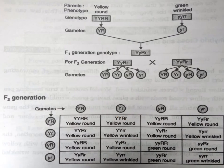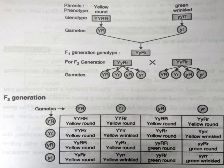Now we will see detailed information about dihybrid cross. A cross between two pure lines with two different pairs of contrasting characters is called a dihybrid cross. In this slide, you can see two parents: yellow round and green wrinkled. These are called two pairs of different contrasting characters — first is yellow, second is green. Likewise, first is round and second is wrinkled. So yellow round and green wrinkled are known as two pure lines with two different pairs of contrasting characters.